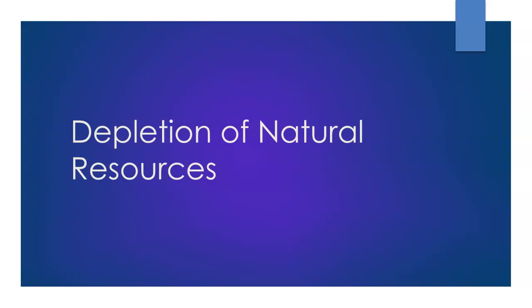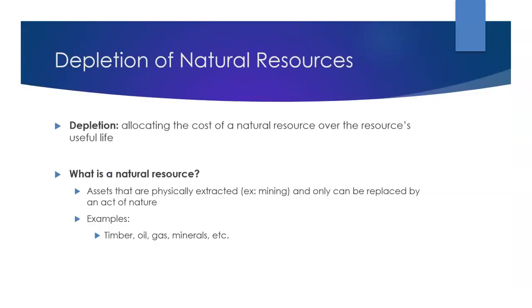Let's talk about the depletion of natural resources. First, what is depletion? Depletion is when you allocate the cost of a natural resource over that resource's useful life. It probably sounds a little familiar because it's similar to depreciation — where we allocate the cost of equipment or a building over that asset's useful life. You can think of depletion as almost the depreciation of a natural resource.